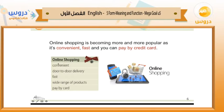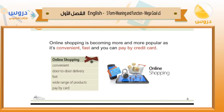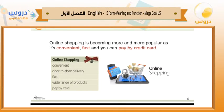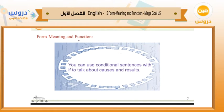What about online shopping? Online or e-shopping is the easiest way to shop. You use the internet, your laptop, or your mobile, and you pay by Mastercard or credit card. Words related to online shopping include: convenient, door-to-door delivery, fast, wide range of products, and pay by card or cash. For example: 'Online shopping is becoming more and more popular as it's convenient, fast, and you can pay by credit card.'